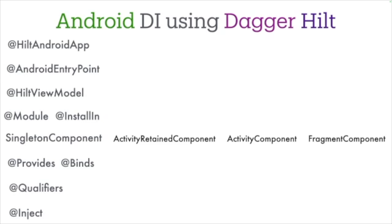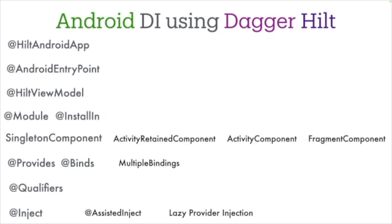There are also some advanced injection patterns, such as assisted inject and lazy provider injection. They let you handle partial runtime arguments or create dependencies on demand, and they still rely on the same core constructor injection pattern you have already used — instead of @Inject constructor you just add a bit more configuration. No major big leap. Then there are multi-bindings and other specialized @Provides approaches, where you can provide sets or maps of objects to Hilt using the exact same module structure, just with a different annotation like @IntoSet or @IntoMap.